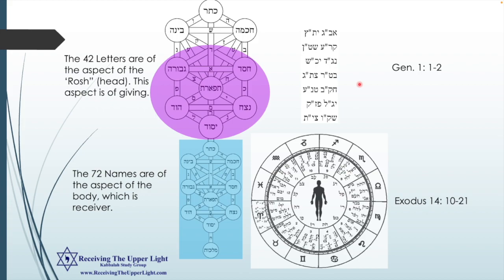Something to keep in mind: the 42 letters are of the aspect of Rosh — the head, the aspect of giving. If we compare the 42-letter name to the 72 names of God, the 42 are more spiritual vessels. With the 42-letter name we can work through the year without the judgment found in the 72-letter names. The 72 names are of the aspect of the body — the receiver — and we will see how to attract that light down and work with it when we study the 72 names of God.